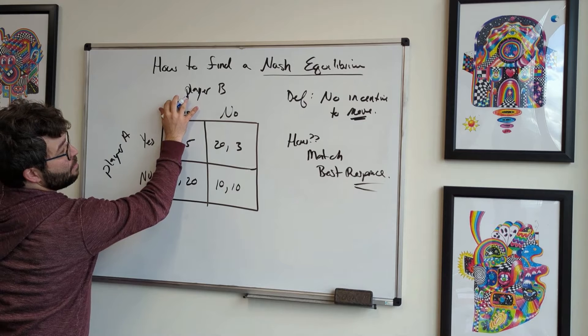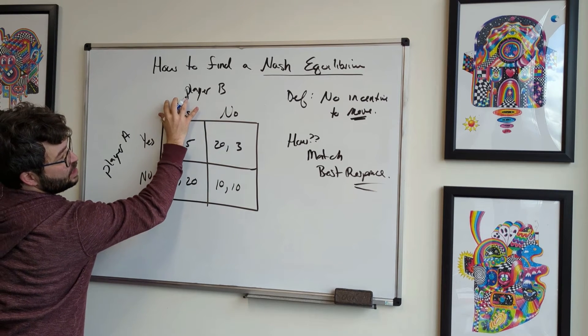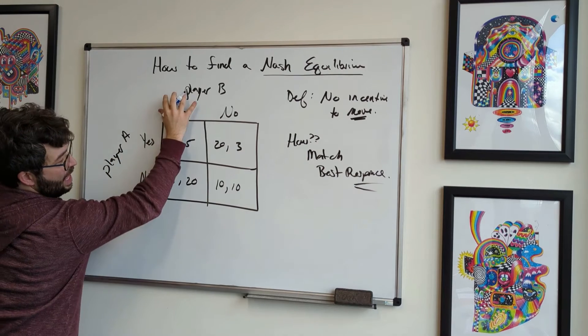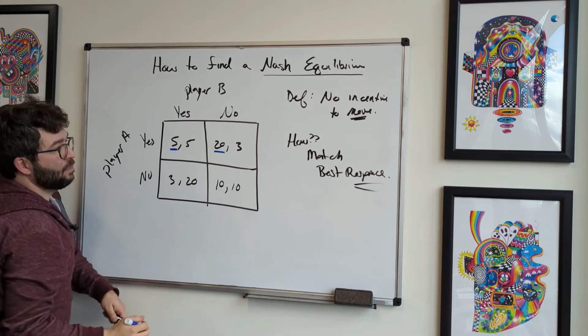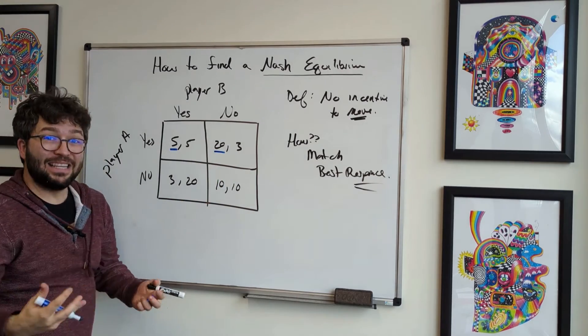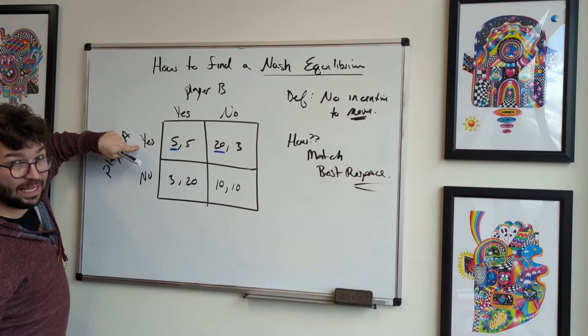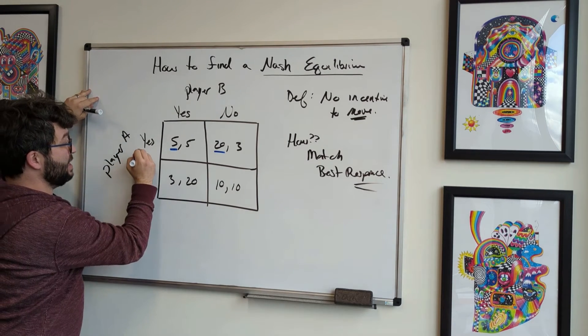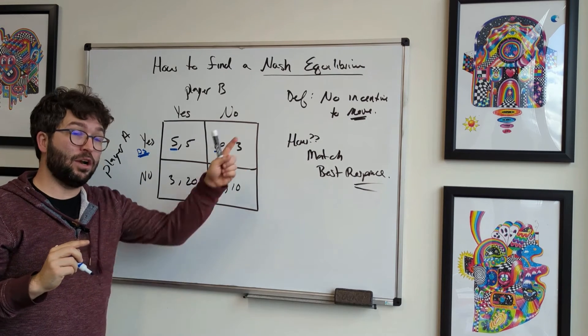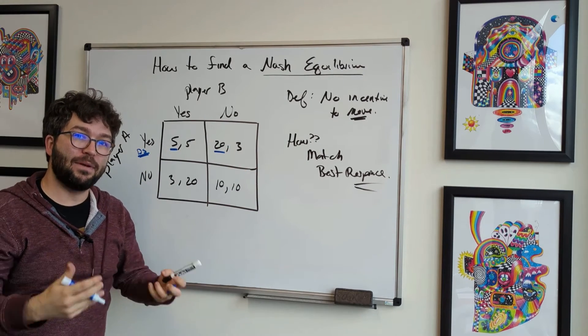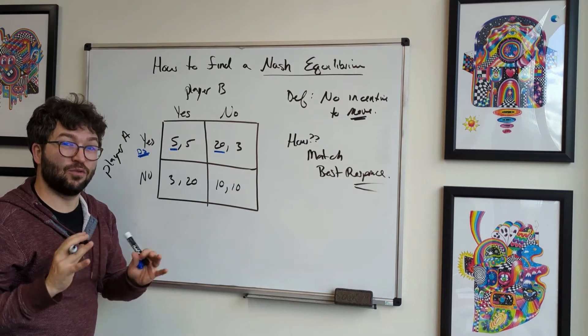Now, what if player B plays no? Well, if player B plays no, then again, player A is either going to go 10 or 20. They would rather play 20. In fact, no matter what player B plays, player A always wants to play yes. That is going to be a dominant strategy. I'm just going to put a DS there. I have a video—I'll make sure I put it up there—a video on dominant strategy if you want to look at that as well. It's very, very old, but it's a great video.